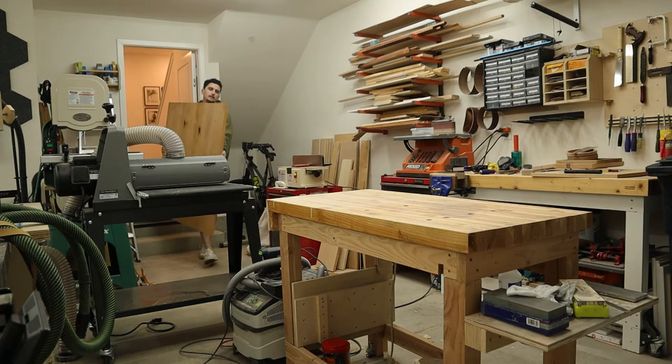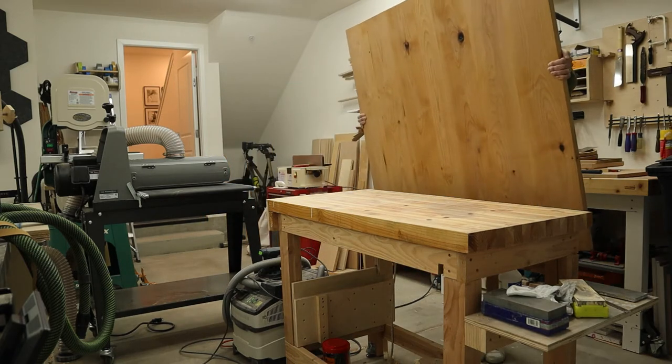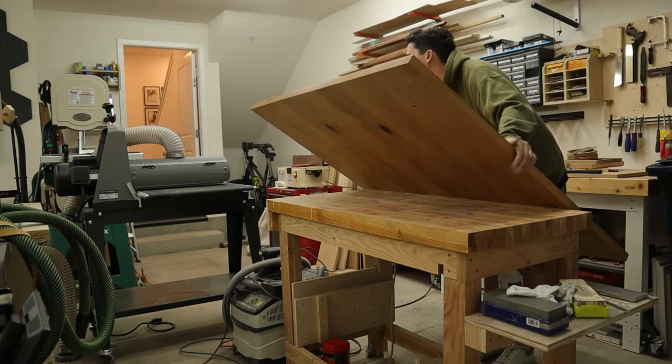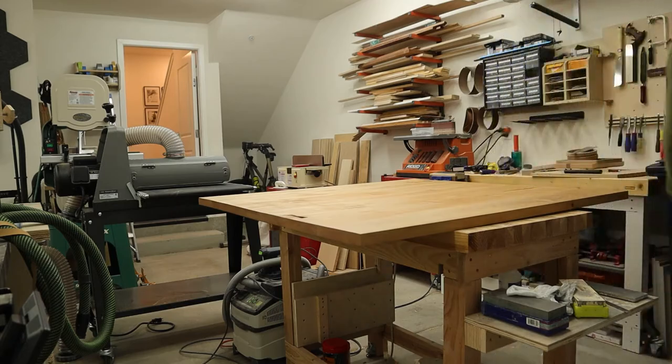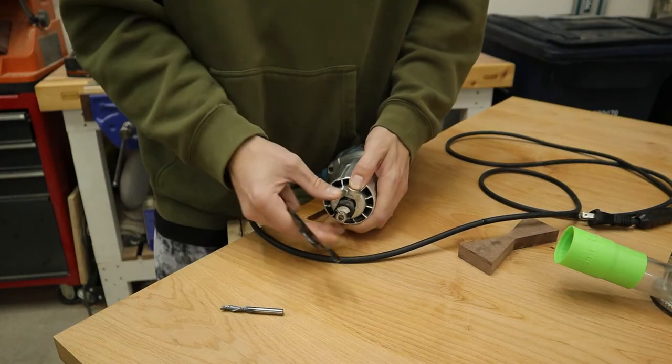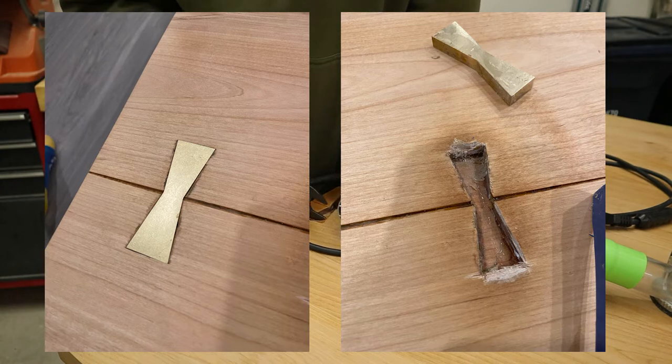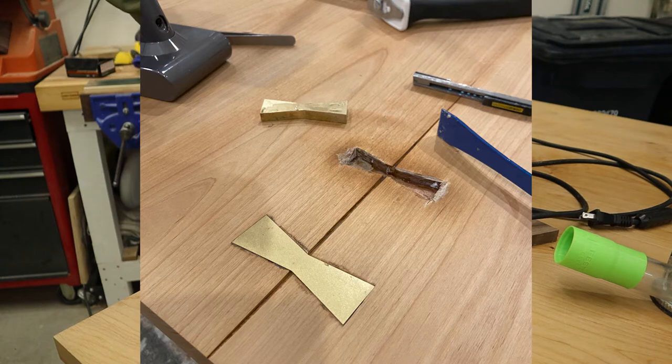So these bow ties are going to be inlaid in a coffee table that I made previously. It did have some brass bow ties that were inlaid, but when I installed them they didn't turn out very clean. So I ended up pulling them out and I'm redoing them with walnut bow ties. Here are some pictures of the brass bow ties before, and I had a hell of a time getting those bad boys out of there.